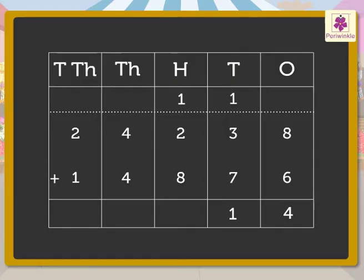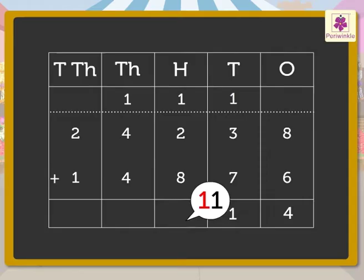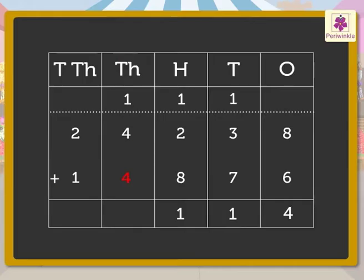Next, add the hundreds: one, two, and eight. We get the number eleven. Regroup the eleven hundreds as one thousand and one hundred. Carry one thousand to the thousands column and write one in the hundreds column. Then add the thousands: one, four, and four. We get the number nine, which we write in the thousands column.